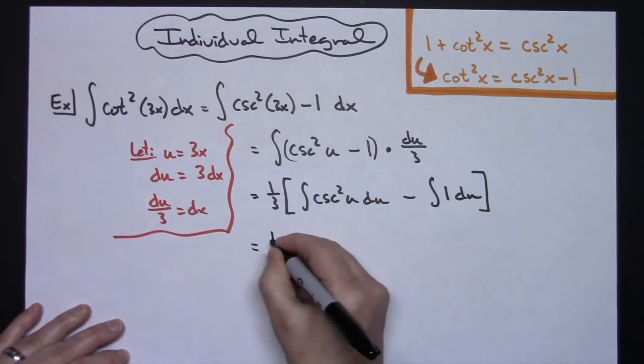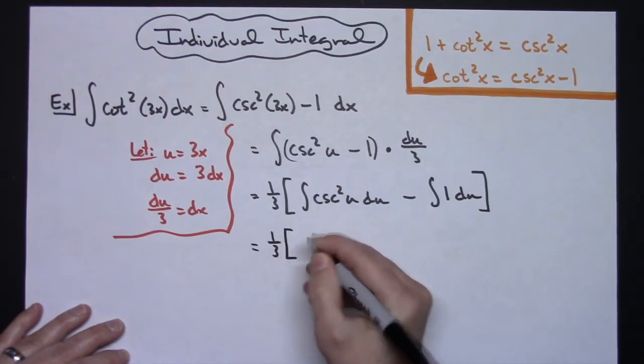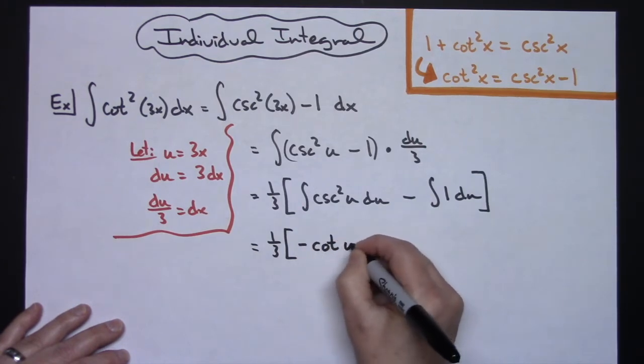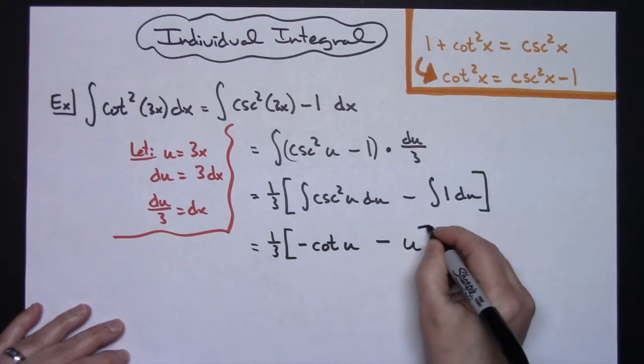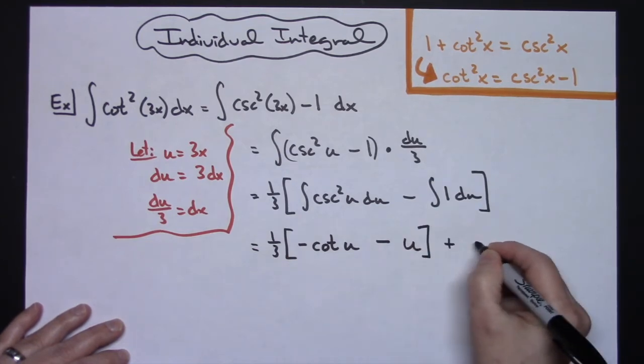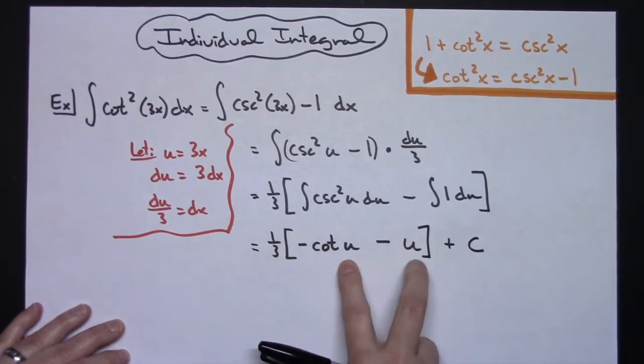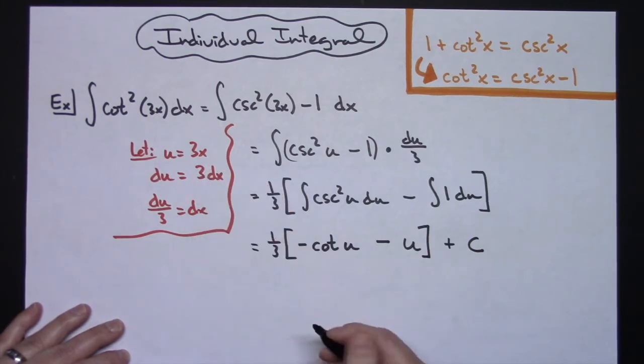So on my next step I'm going to have a 1 3rd. Integrating here negative cotangent u minus integrating here a u. I've now fully integrated so plus c and I can replace my u's with the 3x here.